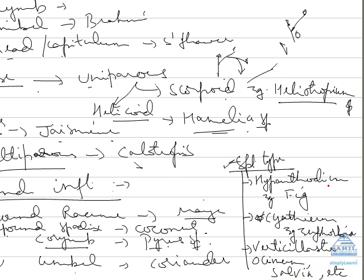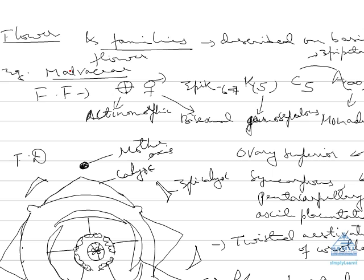Now coming to a special type of inflorescence. First is hypanthodium, example in Ficus species. Here we are having male, female, and neutral gall flowers. Similarly we have cyathium inflorescence in Euphorbia species. And what is tricky, which is difficult to understand, is for example Ocimum tulsi or Salvia flower, which have verticillaster inflorescence.